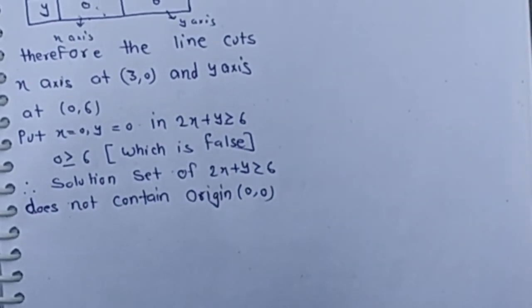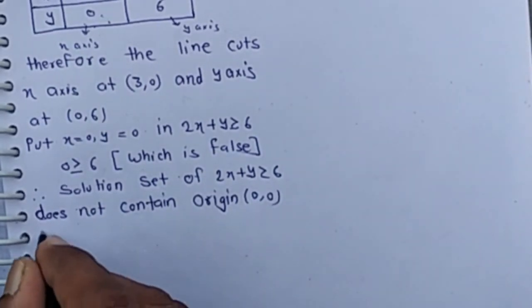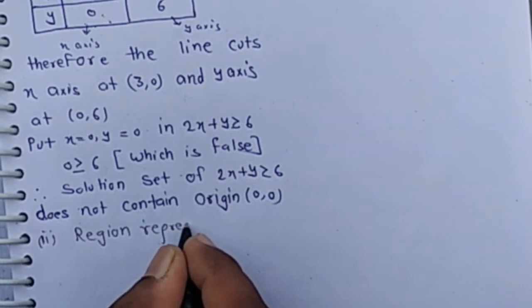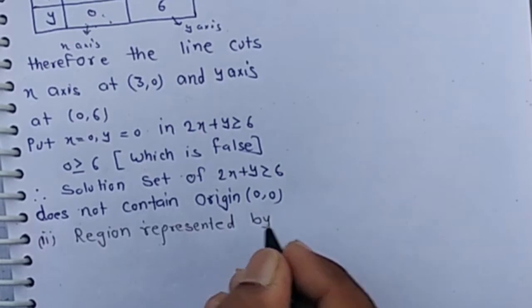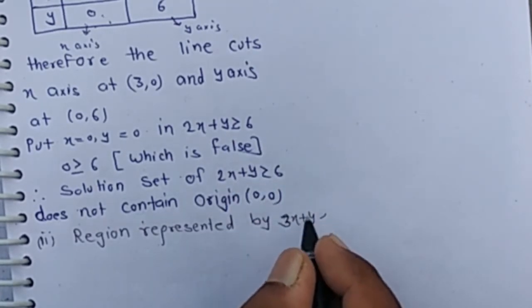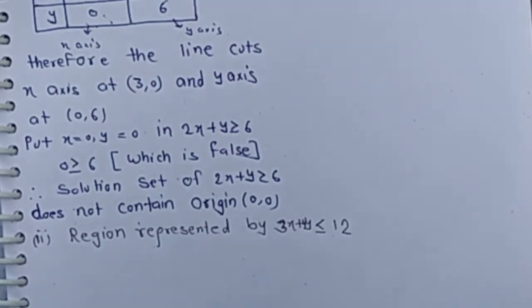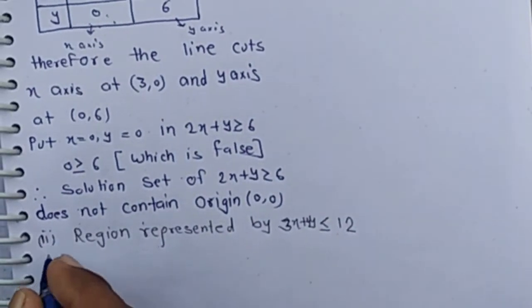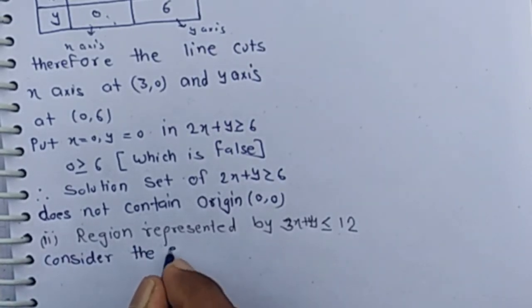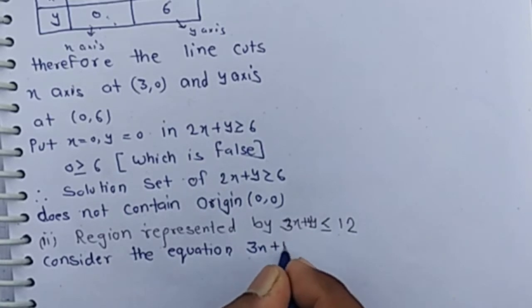Now the second inequality: the region represented by 3x plus 4y is less than or equal to 12. We consider the equation — converting this inequality into an equation, we get 3x plus 4y equals 12.